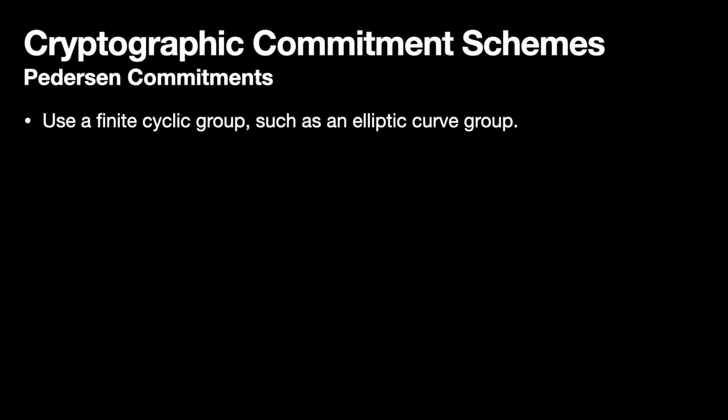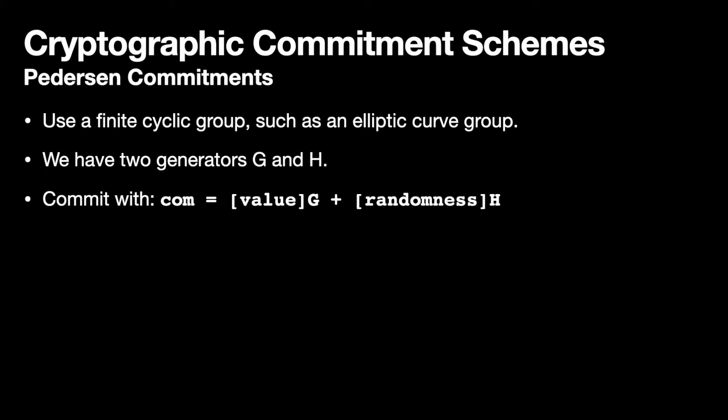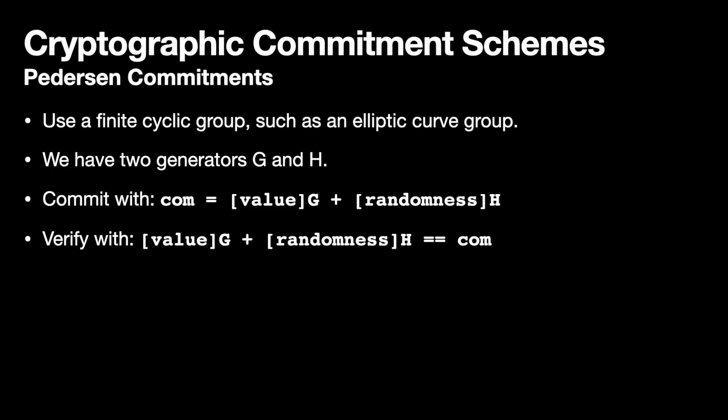Another commitment scheme that's commonly used is a Pedersen commitment. In this commitment scheme, we have a finite cyclic group such as the sort that's used in elliptic curve cryptography — a group in which the discrete log problem is computationally hard. In that scheme, we need to pick two generators called g and h, which are going to be points in the elliptic curve case. We can generate a commitment as the scalar multiplication of the scalar value with g, plus the scalar randomness multiplied with the point h. The result is an elliptic curve point, our result com.